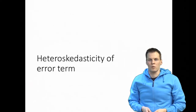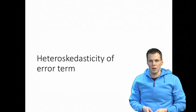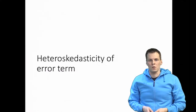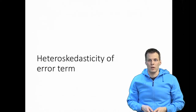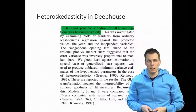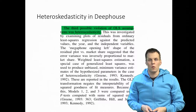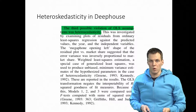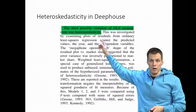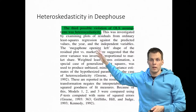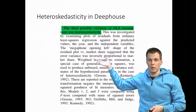Heteroscedasticity is one of the problems you may encounter in regression analysis. Regression analysis assumes that the error term is homoscedastic, which means that the error term variance does not depend on any of the observed variables. Deep House had this problem, and they present a pretty good example of how you are supposed to deal with problems in regression analysis. They say they have a heteroscedasticity problem, then they explain what the problem is and what they did about it.